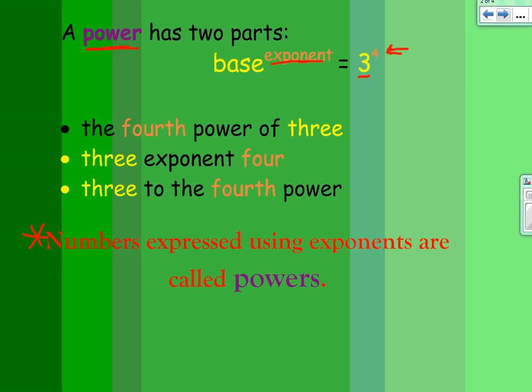And if I were to write this out in factor form, I would write three times three times three times three. The base number is written four times. So the exponent tells us how many times, and the base number tells us which number.